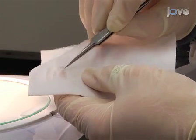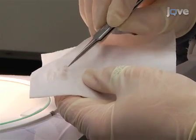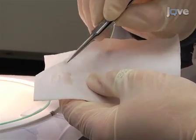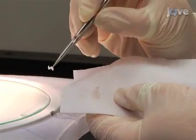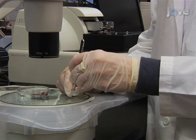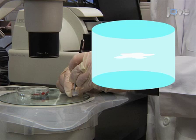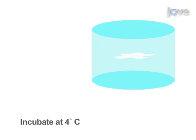Blot dry the lower urogenital tract tissue and submerge it in the agarose solution. Use forceps to orient the tissue so that it is suspended halfway between the top and bottom of the ring mold. Incubate at 4 degrees Celsius until the agarose has solidified.